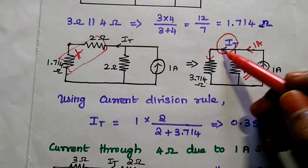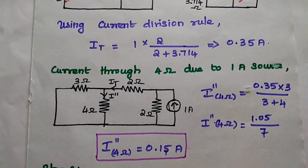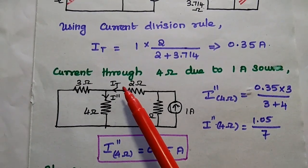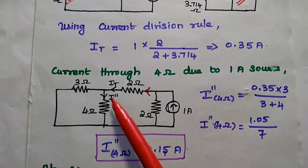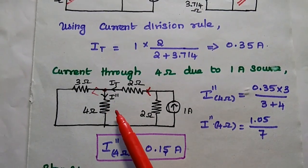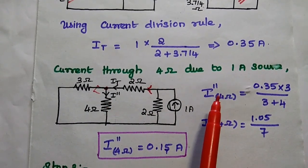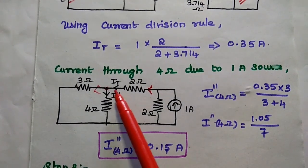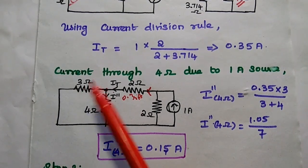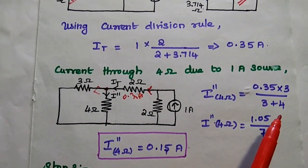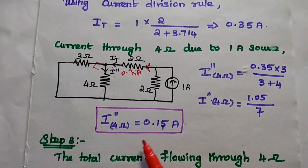We have obtained this branch current as 0.35 ampere. But we want the current through the 4 ohm resistor, so we apply the current division rule again. I double dash through the 4 ohm = 0.35 × 3 / (3 + 4) = 1.05 / 7 = 0.15 ampere. That is the current flowing through the 4 ohm due to the 1 ampere current source.